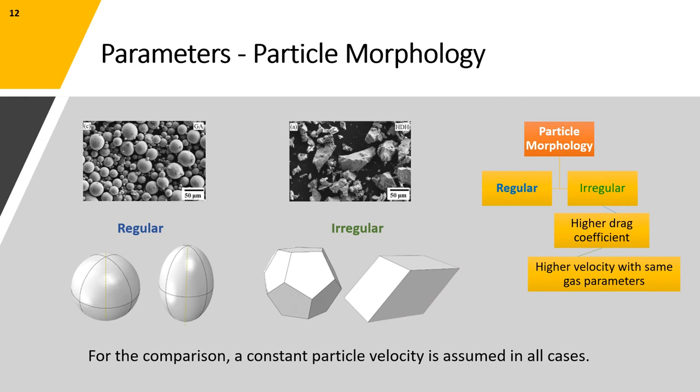The powders that are used in cold spray process come in a variety of shapes and sizes. The more regular morphologies which can be seen on the left including the spherical and ellipsoid shapes are usually the result of gas atomization process. However, the more irregular shapes, including dodecahedron and hexahedron shapes, are results of high-pressure water atomization. When compared, irregular shapes will have a higher drag coefficient.